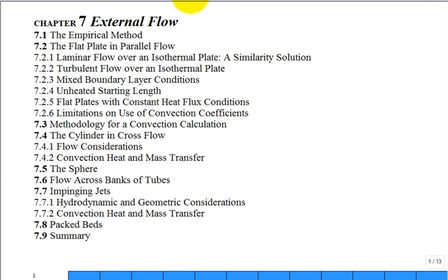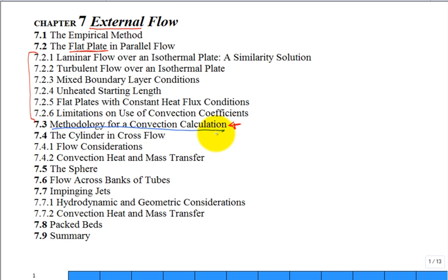We're moving into Chapter 7. We only had two lectures in Chapter 6, which laid the foundations for convection heat transfer. We spent two lectures in Chapter 7 dealing with external flow, then two lectures in internal flow, and then maybe only one lecture in natural convection. So we're into convective heat transfer, focused on external flow. We revisit flow over a flat plate and spend quite a bit of time on it. The authors introduced a general methodology for convection heat transfer calculations.